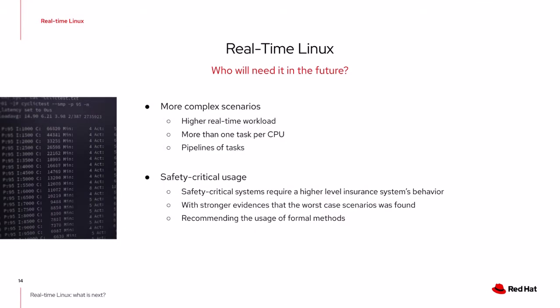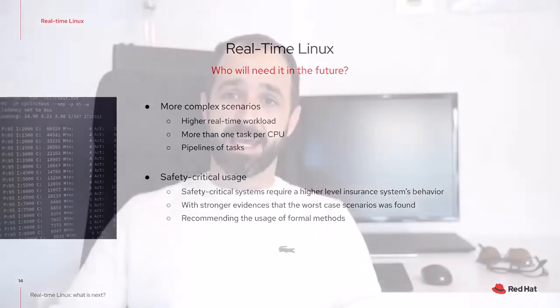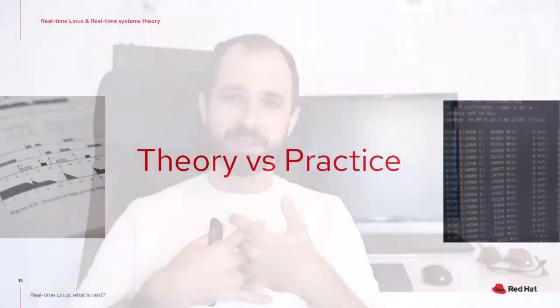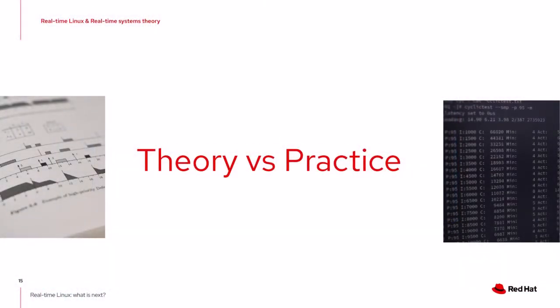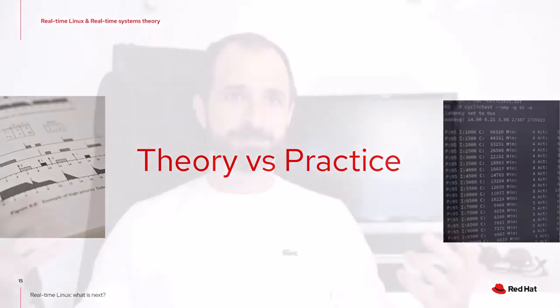Safety-critical system usage requires strong evidence that worst-case scenarios are found and can be handled. For more extreme cases, formal methods are recommended to show that worst cases are addressed. This new use case requires a closer integration between the explanations that theory can provide and the results we have in practice, and how one thing can match the other.